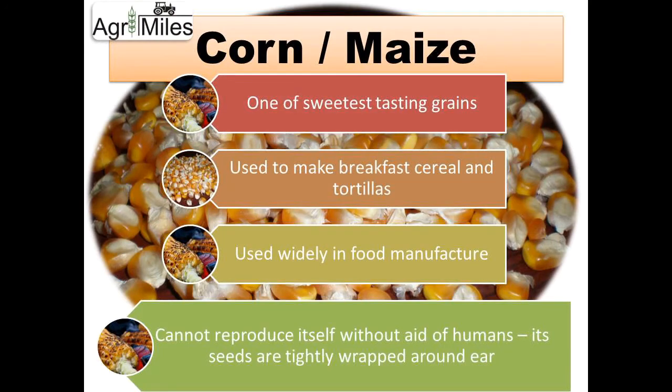The third member of the major cereals is maize. It is one of the sweetest-tasting grains and is used for making breakfast cereals and tortillas — tortillas being a product made purely from maize, especially in Latin America — and it is widely used in food manufacturing. An important feature is that maize is unable to reproduce itself without human help, because the seed or grain is tightly wrapped around the ear and the husk tightly covers them. They are not dehiscent and cannot disperse by themselves, so they need human help for dispersal.